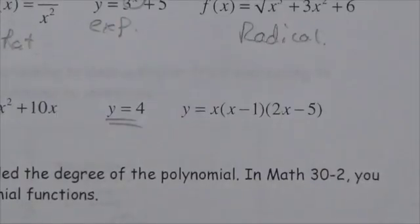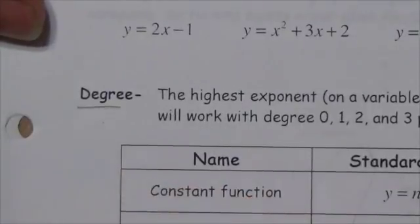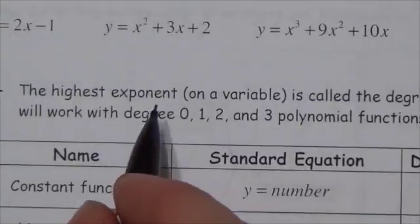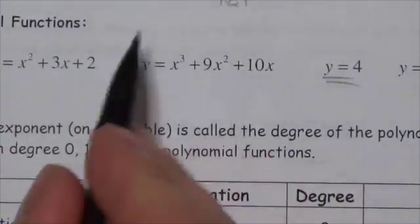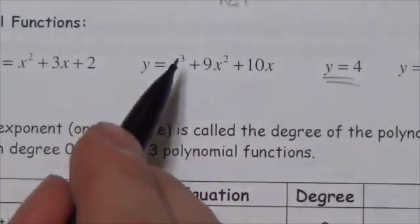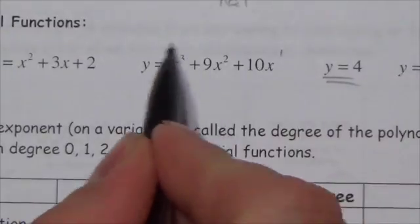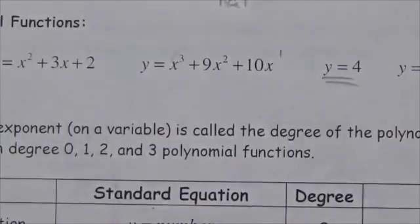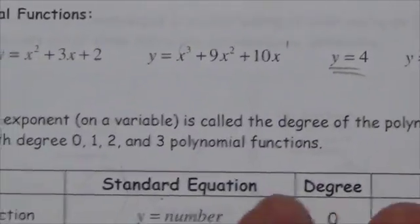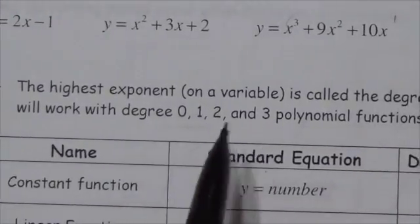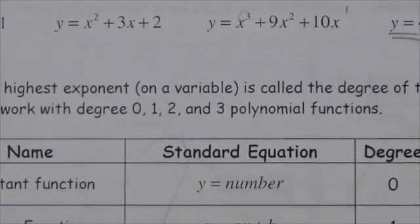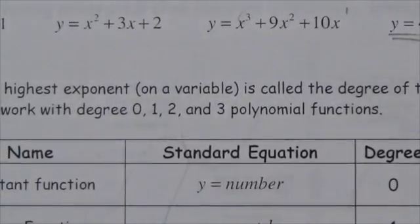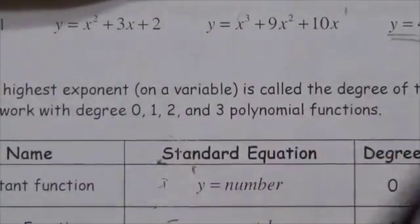Let's look at a few other details. The degree is the highest exponent on a variable in the polynomial. For example, if I've got x³, x², and x, the largest exponent is 3, so the dominant term is cubic and the degree is 3. In Math 30-2, we're only going to work with degree 0, 1, 2, and 3 polynomial functions — beyond that ideas start to repeat.